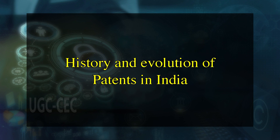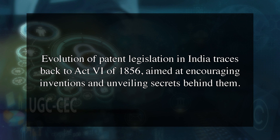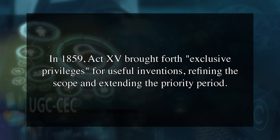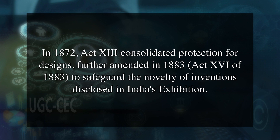We will now discuss the history and evolution of patents in India. The evolution of patent legislation in India traces back to Act VI of 1856, aimed at encouraging inventions and unveiling the secrets behind them. Act IX of 1857 repealed Act VI due to the lack of British Crown approval. In 1859, Act XV brought forth exclusive privileges for useful inventions, refining the scope and extending the priority period. In 1872, Act XIII consolidated protection for designs, further amended in 1883 by Act XVI of 1883, to safeguard the novelty of inventions disclosed in India's exhibitions.